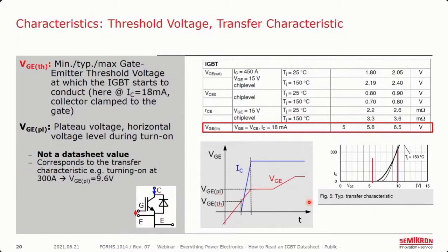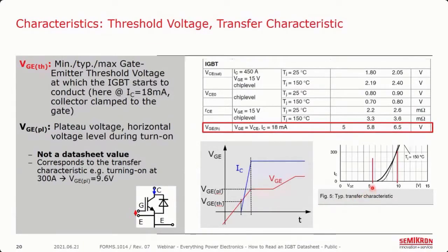For the gate of the device, we have the gate-emitter threshold voltage — the voltage where the device begins to turn on, where a very small collector current of 18 milliamps starts to flow. A more interesting value is the plateau voltage — the gate-emitter voltage where ICNOM can be expected to occur, so 450 amps in this case. Looking at the typical transfer characteristics curve, the VGE threshold is way down at 5.8 volts, but up at 9.6 volts for example with a 300-amp device you'd be switching nominal current — so there's a big difference between the gate-emitter threshold voltage and the voltage at which you see very high collector currents.